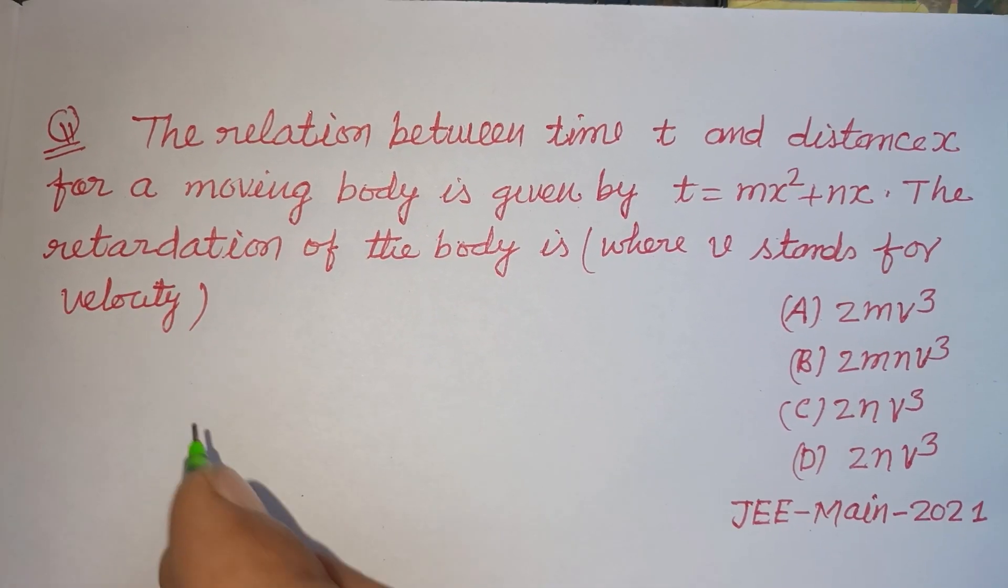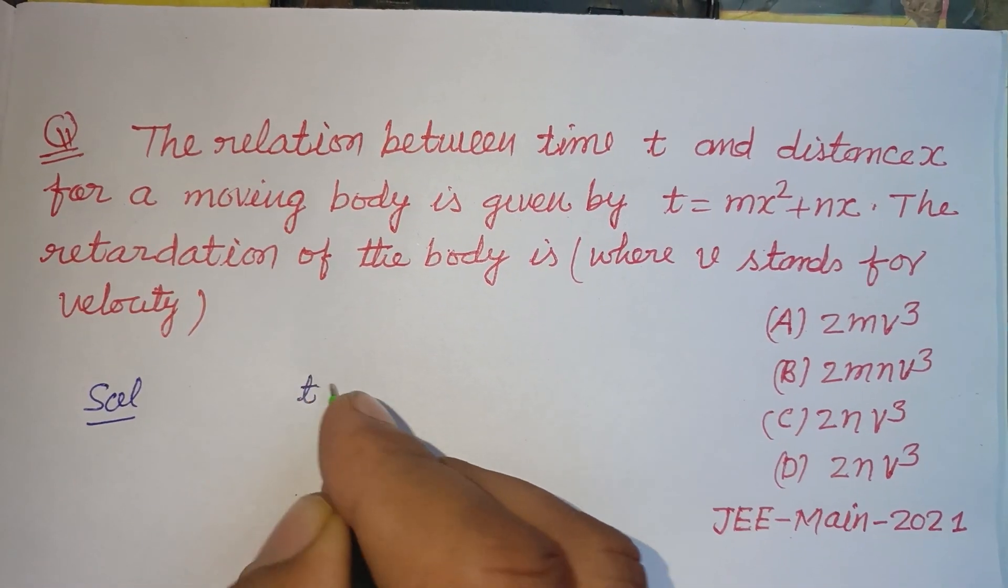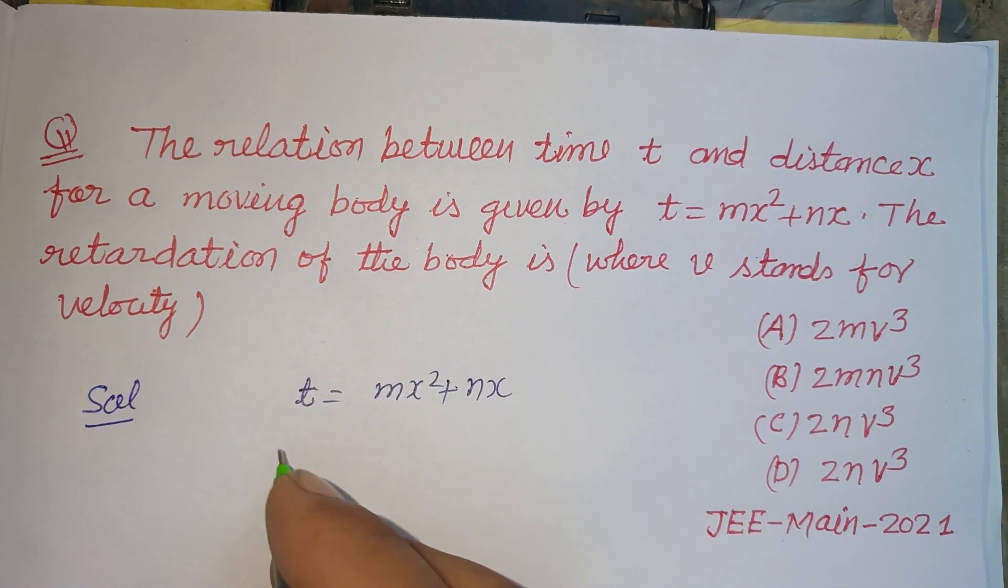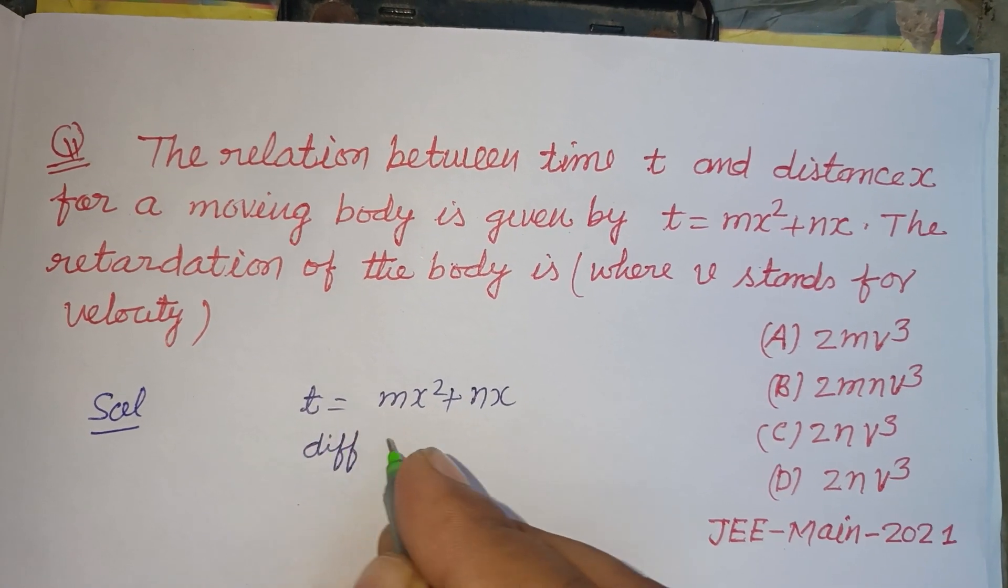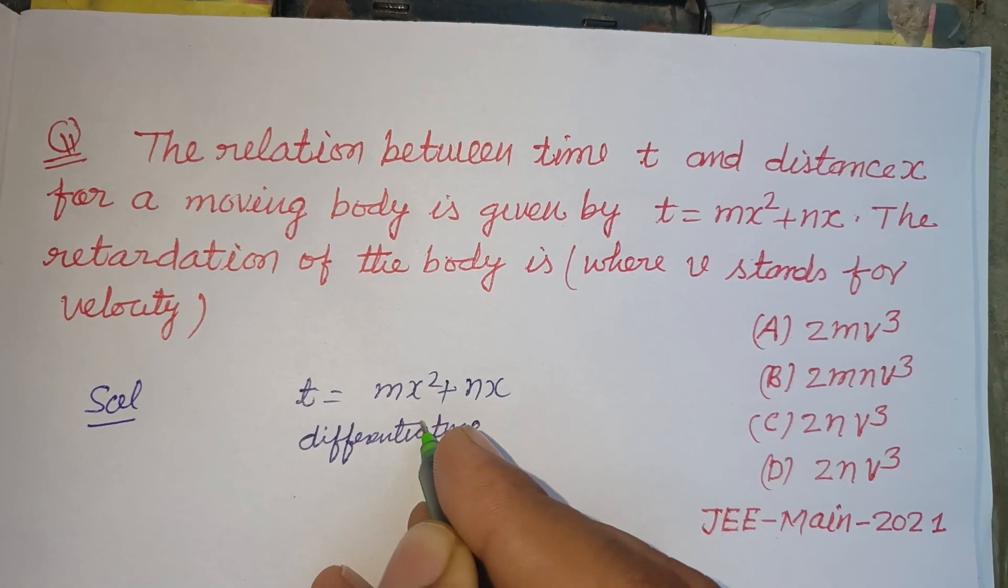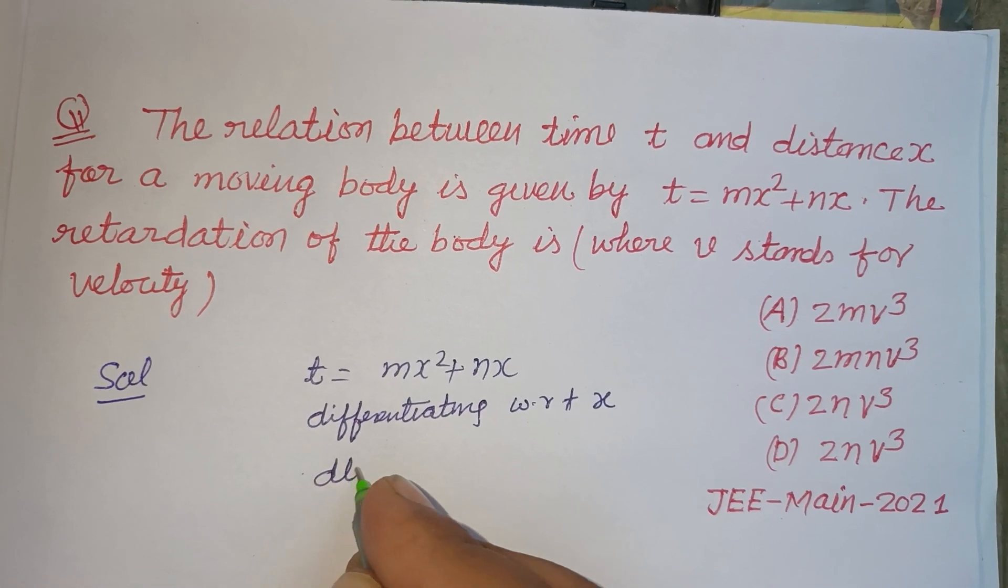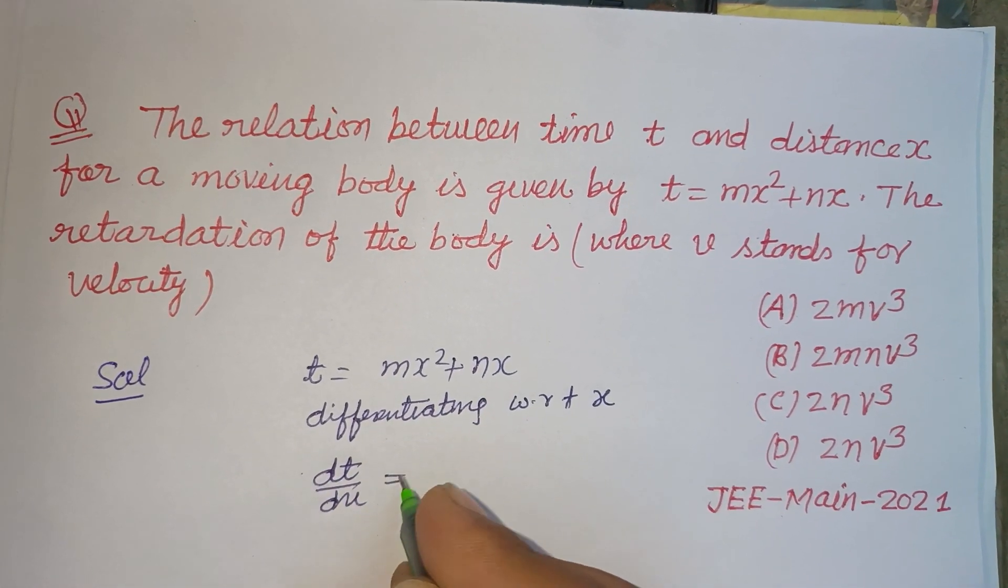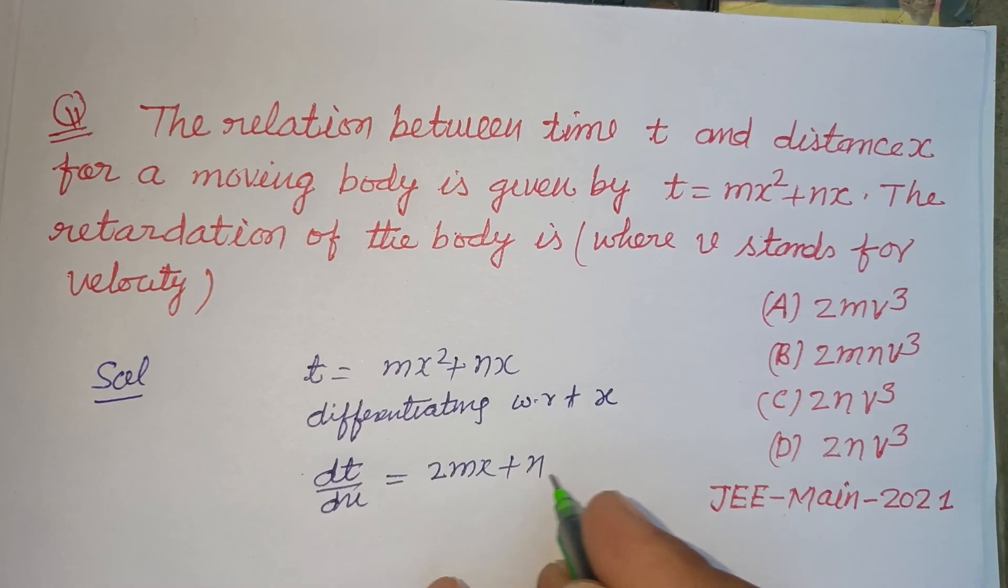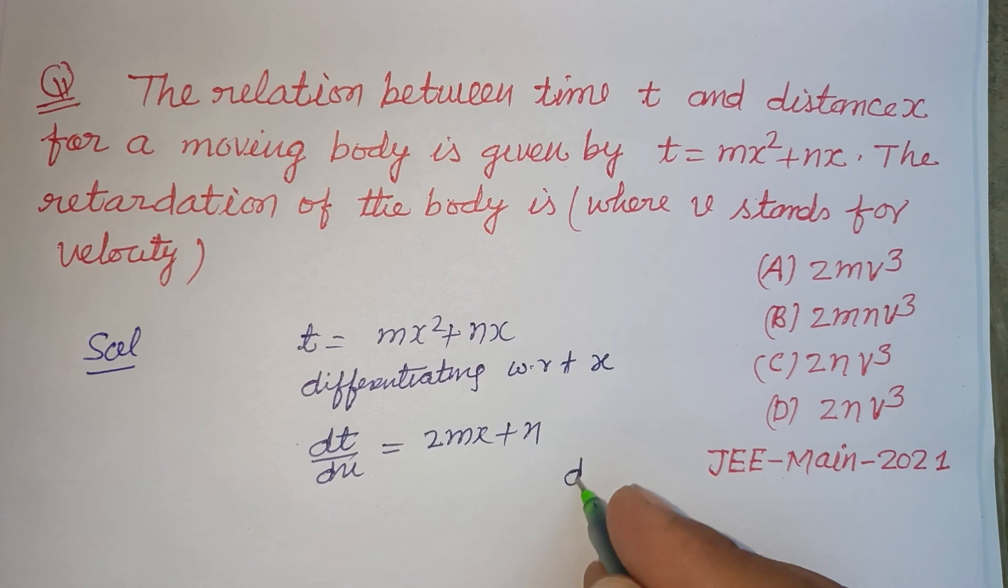So here retardation is being asked. t equals mx squared plus nx. Differentiating with respect to x, we get dt over dx equal to 2mx plus n. And you know that dx over dt is v.